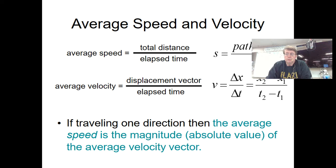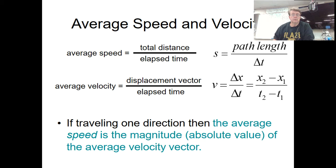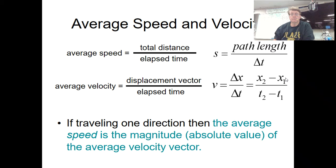If you're traveling in one direction and never change that direction, the size of your displacement equals the size of your distance. As soon as you change direction, the two deviate from each other. Remember that delta means 'change in,' defined as final minus initial. So delta x, or change in position, is final position minus initial position. Delta t is final time minus initial time.